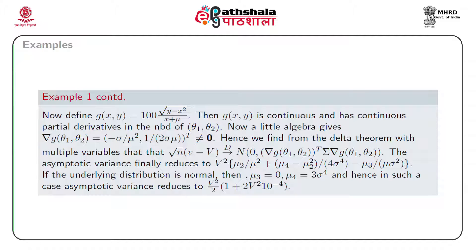A little algebra gives the gradient vector of G evaluated at (theta_1, theta_2) as a two-component vector with first component minus sigma divided by mu squared and second component 1/(2*sigma*mu). Since we have assumed mu not equal to 0, this gradient vector is different from the null vector. Hence we can apply the delta theorem, and we find that sqrt(n) * (small v minus capital V) converges in distribution to a normal variable with mean 0 and variance expressed as a quadratic form.